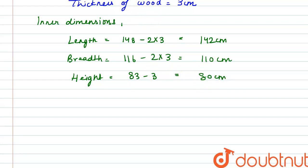So here we have to find the inner surface area. So we know that the formula for surface area of open cuboid is equal to twice into L plus B into H plus LB.